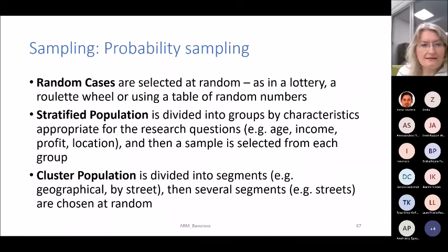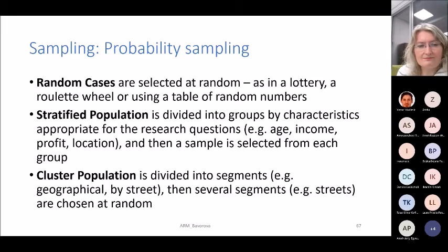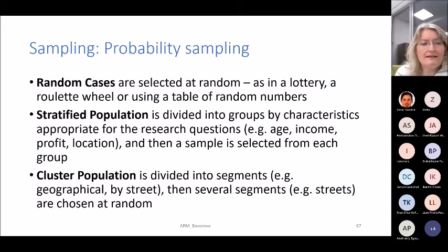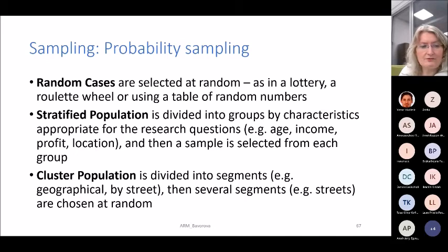Types of probability sampling: simple random — cases selected at random, as in a lottery, using a table of random numbers; you would need a list of all farmers and then randomly select from it. Stratified sampling — the population is divided into groups by a characteristic appropriate for the research questions, like age, income, or location, and then a sample is selected from each group. Cluster sampling — the population is divided into segments, and several segments are chosen at random, such as selecting streets in a city for a consumer survey and interviewing everyone on those streets.